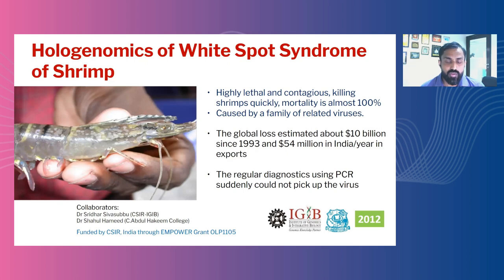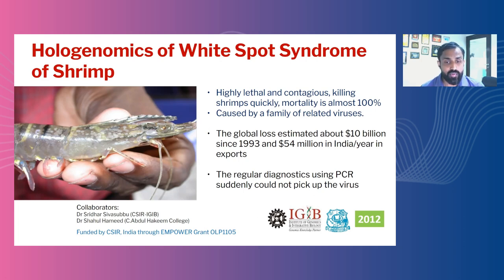Our journey into looking at microbes and whole genome sequencing started almost a decade ago, when we encountered researchers working on a very interesting outbreak in shrimp. This is a really big economic problem because India is one of the largest exporters of shrimp. There was a virus which would infect shrimp and cause a very characteristic white spot, and therefore it was called white spot shrimp virus. Molecular technologies including PCR and antigen-based assay systems were used to detect this virus, but suddenly the assay system stopped working, and nevertheless shrimp were being affected, causing enormous economic loss to farmers.